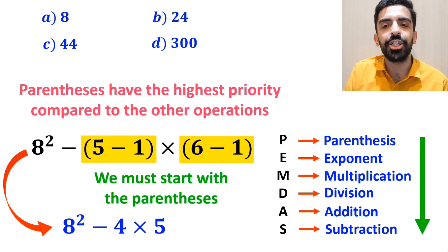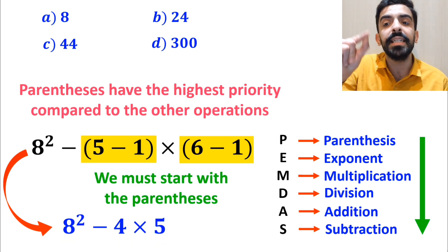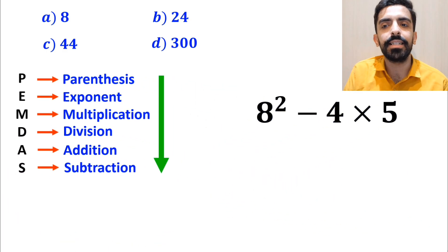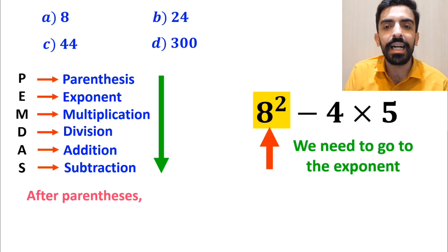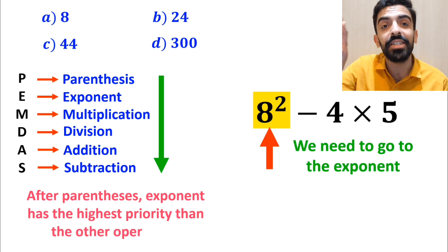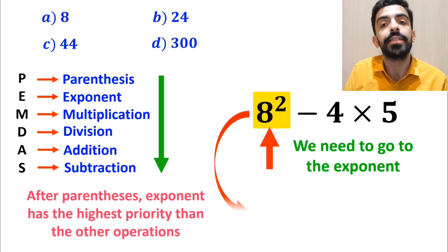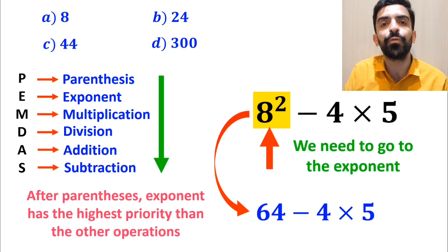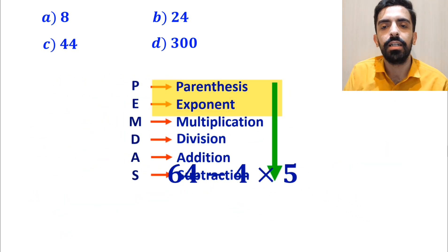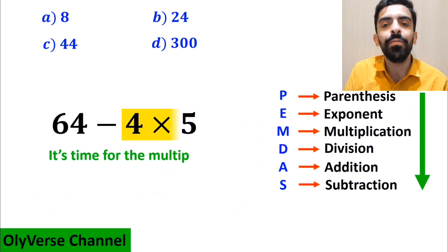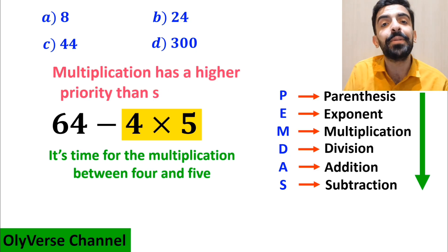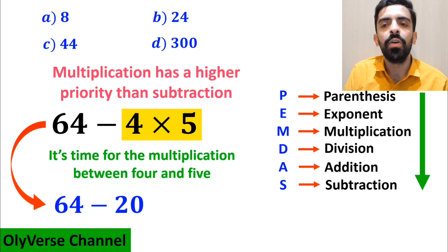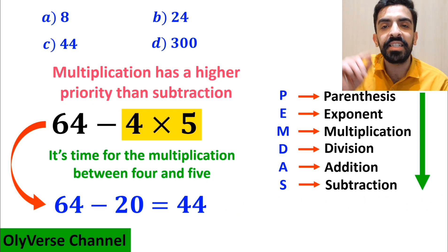So instead of the original expression we write 8 squared minus 4 multiplied by 5. Next we go to the exponent, since after parentheses the exponent has the highest priority. This simplifies to 64 minus 4 multiplied by 5. Finally, we handle the multiplication between 4 and 5, because multiplication has higher priority than subtraction. We rewrite this as 64 minus 20, which gives us the answer 44.